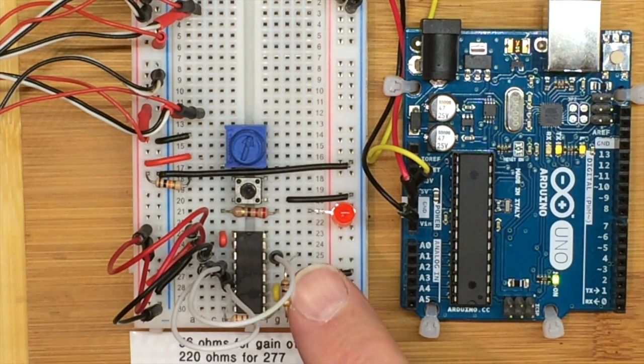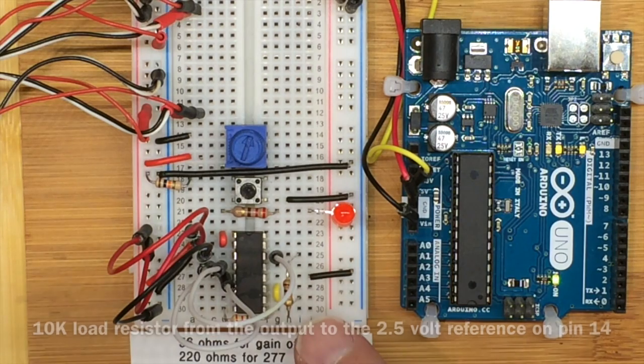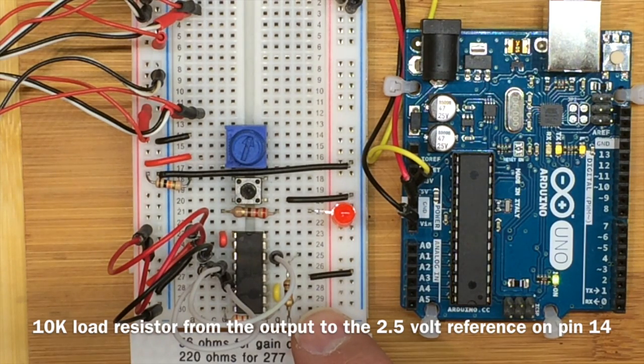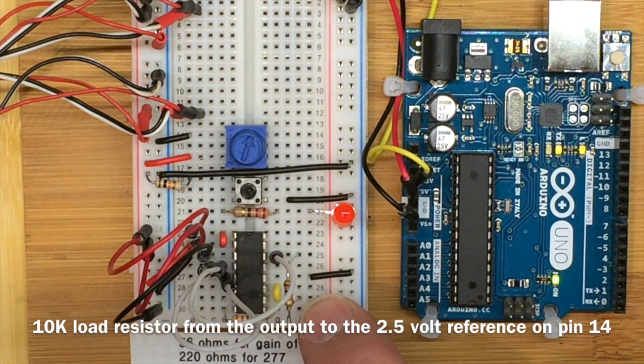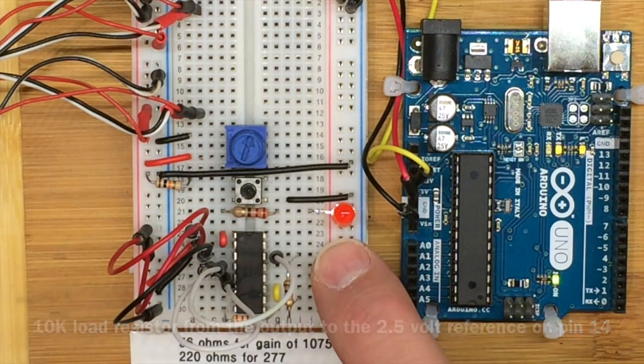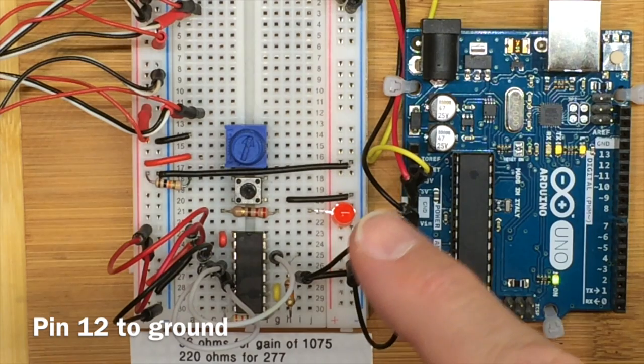This 10k resistor provides a load resistor connecting the amplifier output to the common voltage on pin 14 here. That's the 2.5 volts, so it allows some current to flow from here over to here. This black wire connects pin 12 to ground.